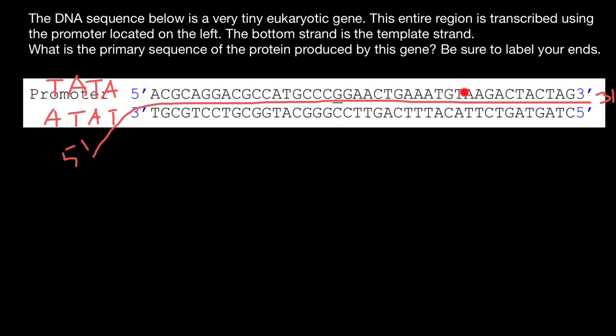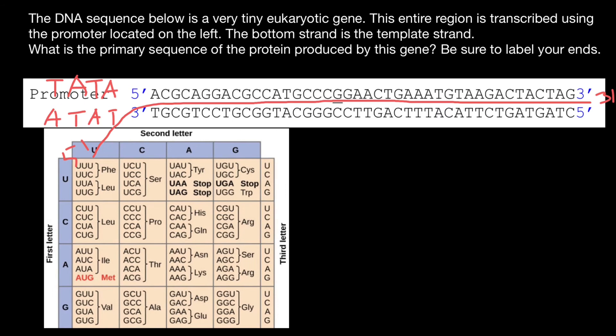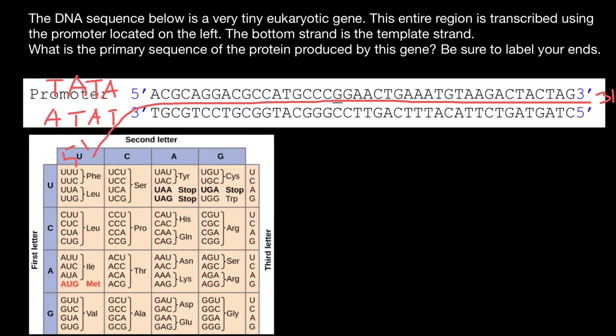Why do we call this strand the coding strand of the DNA? Because it is just like messenger RNA — complementary to the template strand of the DNA. The sequence here is going to be the same as in messenger RNA, with only one difference: wherever we see thymine, in messenger RNA it's going to be substituted with uracil. Now we need this codon table in order to give a sequence.